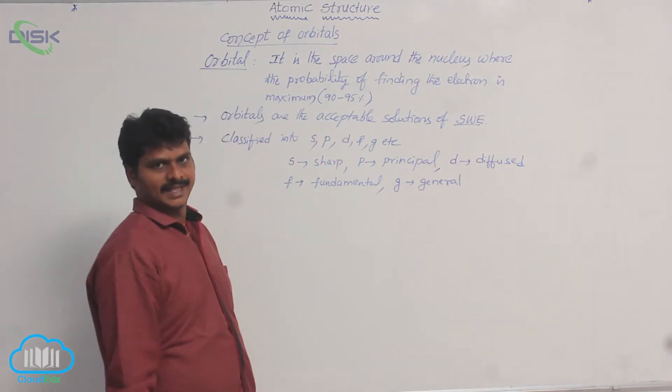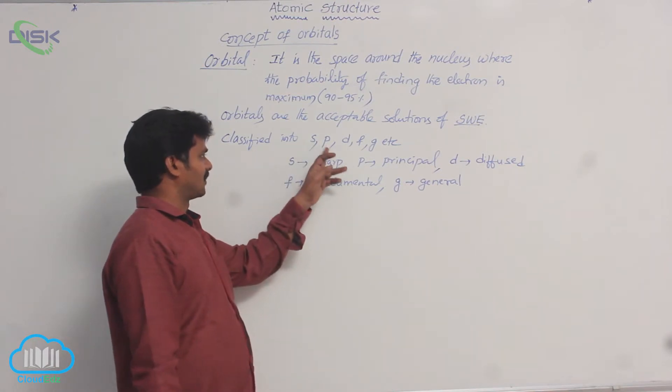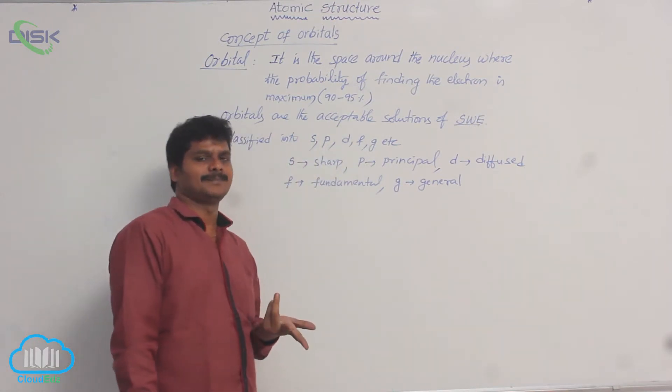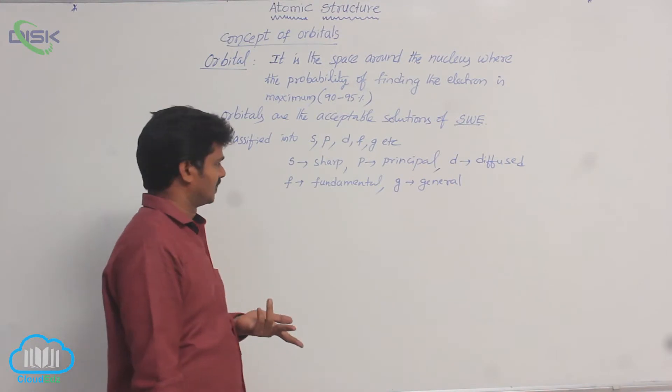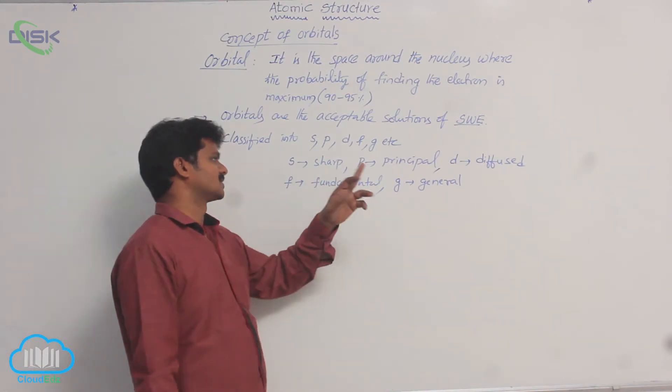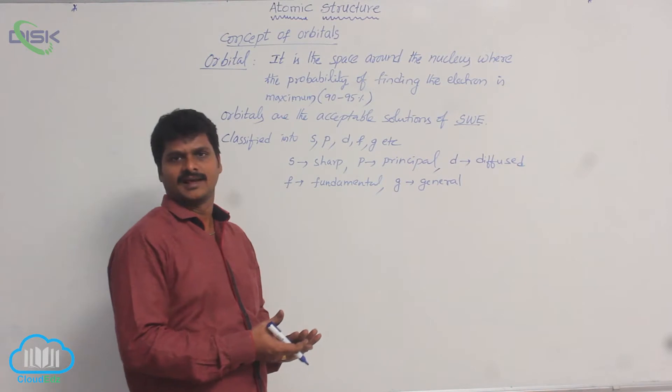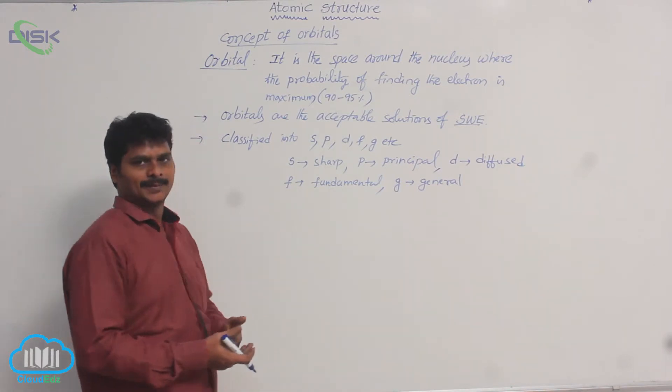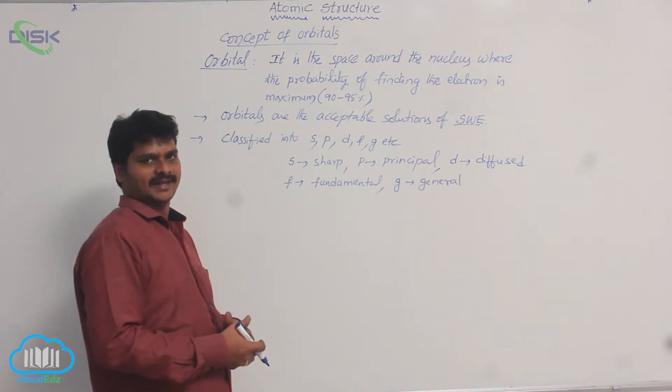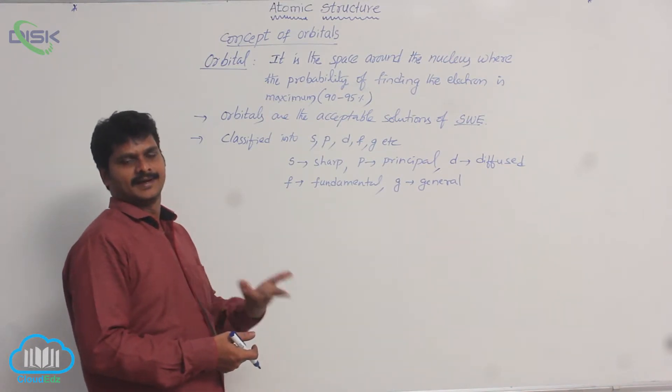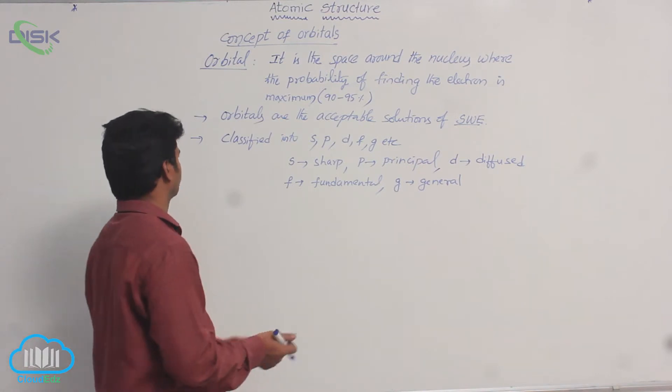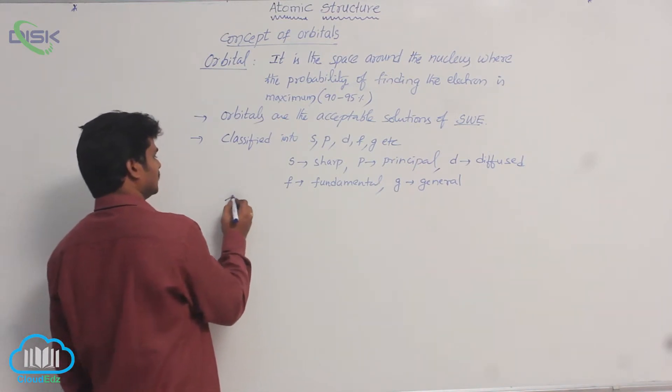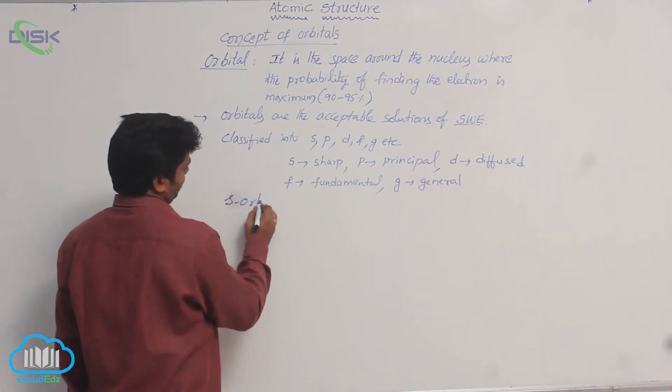So in that way, the names of orbitals, that means symbols of orbitals, are taken from some spectroscopic words: sharp, principal, diffused, fundamental, general, etc. So different types of orbitals are there based on their shape and their orientations. Now, let's see about S orbital first.